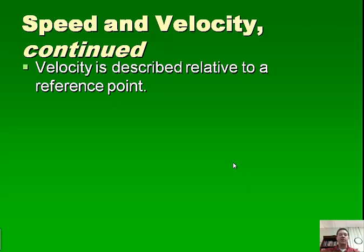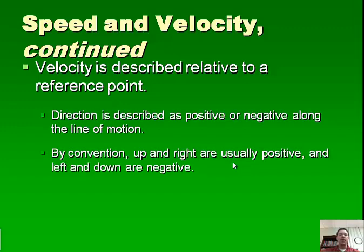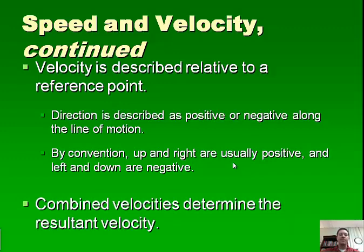Velocity is also described relative to a reference point, so we need to know where we start and finish. A direction is described as positive or negative along a line of motion. Typically we use up and to the right as positive, left and down as being negative. If we were to make a coordinate plane, or where we've got a little graph where we've got an x and y coordinate, any time we move to the right or up it's going to be positive. If we ever move down or left it becomes negative. And this is just some conventions that we use in physics to indicate whether something's moving in a positive direction or a negative direction, either up or down, left or right.